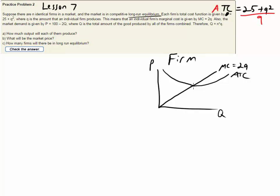We know also that we will be producing at that intersection MC equals ATC. So we can just set 2Q, that's MC, equal to 25 plus Q squared over Q and that's our ATC.